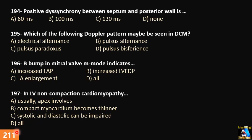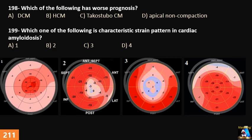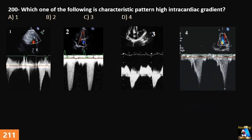Question 197: In left ventricular non-compaction cardiomyopathy: A) usually the apex is involved, B) compact myocardium becomes thinner, C) systolic and diastolic function can be impaired, or D) all of them. Question 198 and Question 200 ask about characteristic strain patterns in cardiac amyloidosis and in high intracardiac gradient respectively. Now let's see the answers and explanations.